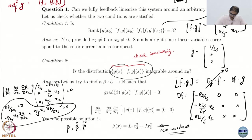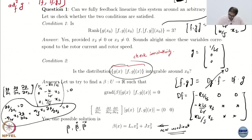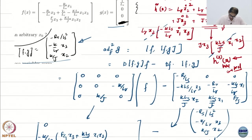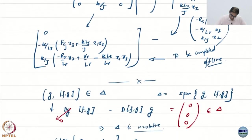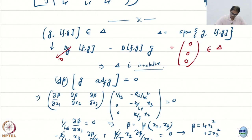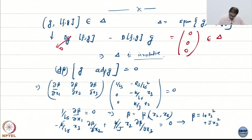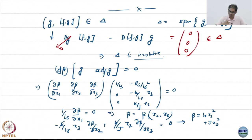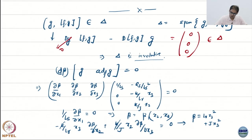We actually verified that when you take the Lie bracket of g and ad_f g, it turns out to be 0. That was what we got. So ad_f g was this, g was this, and ad_f² g turned out to be very complicated. Since the Lie bracket of g and ad_f g is 0, and 0 is trivially in any vector space, we were able to verify the involutivity condition.